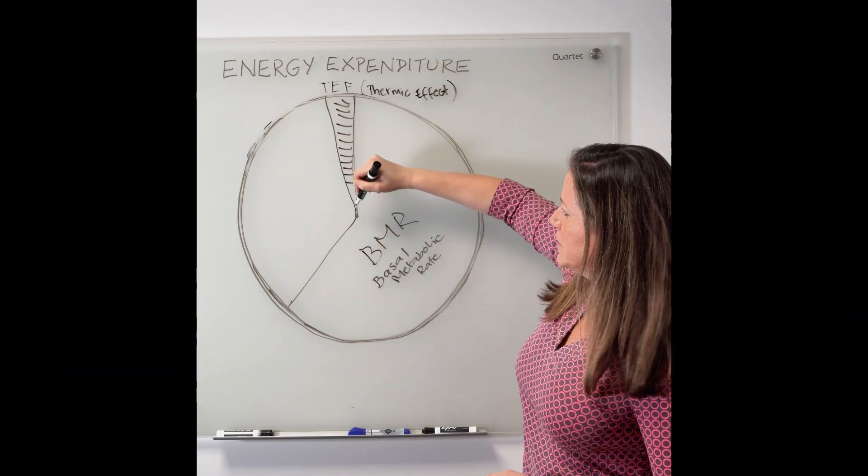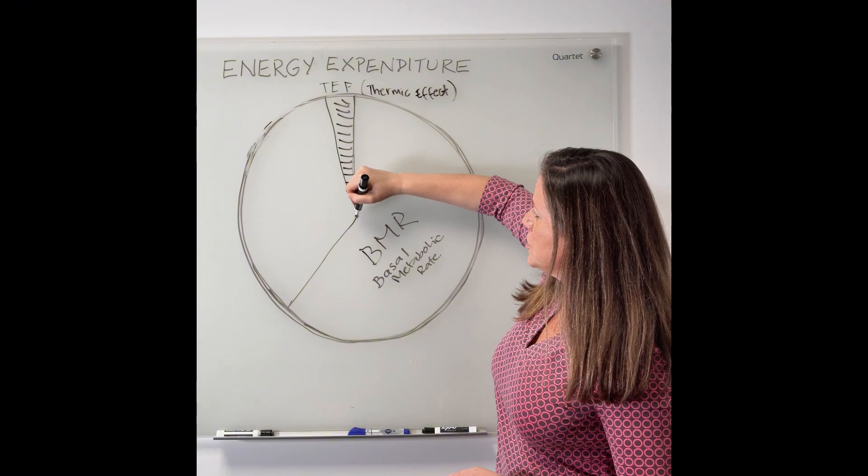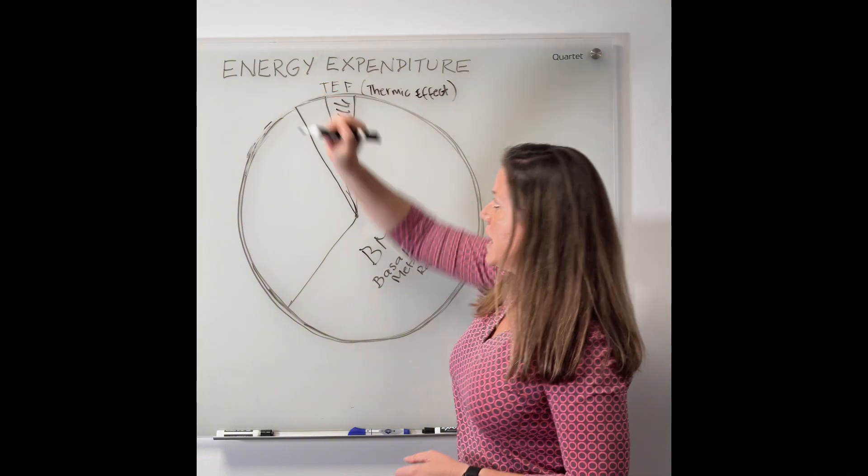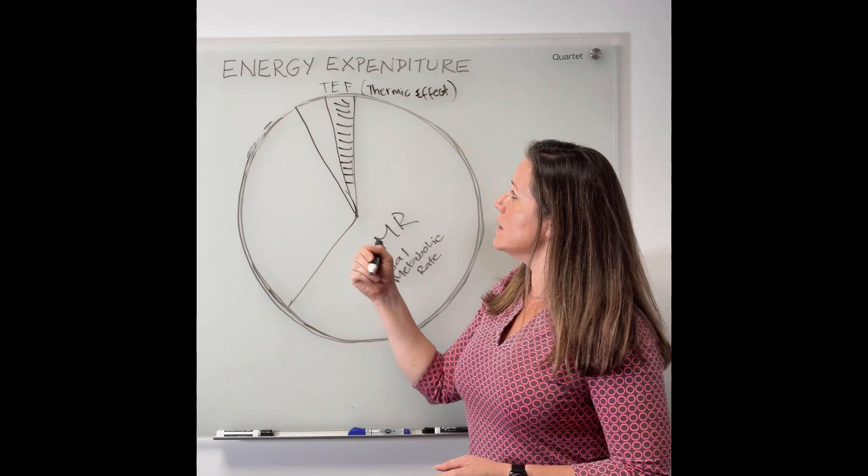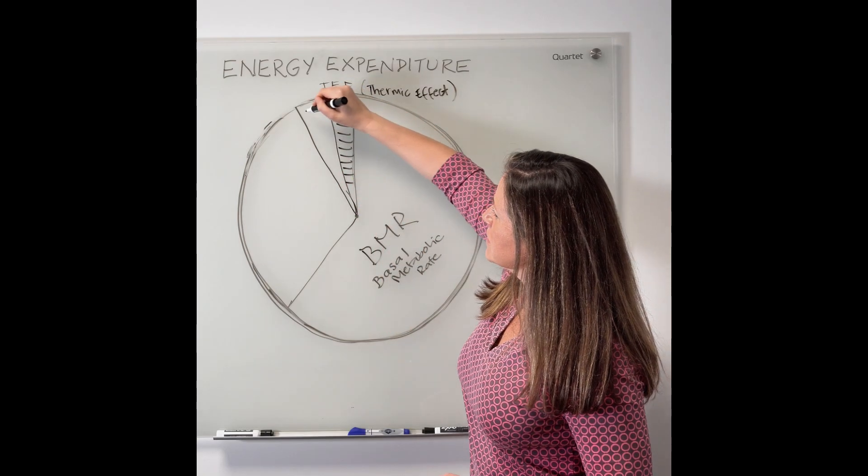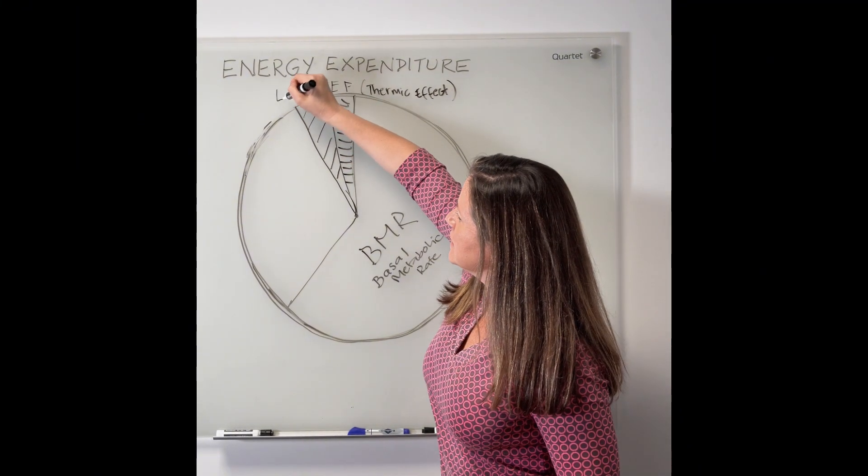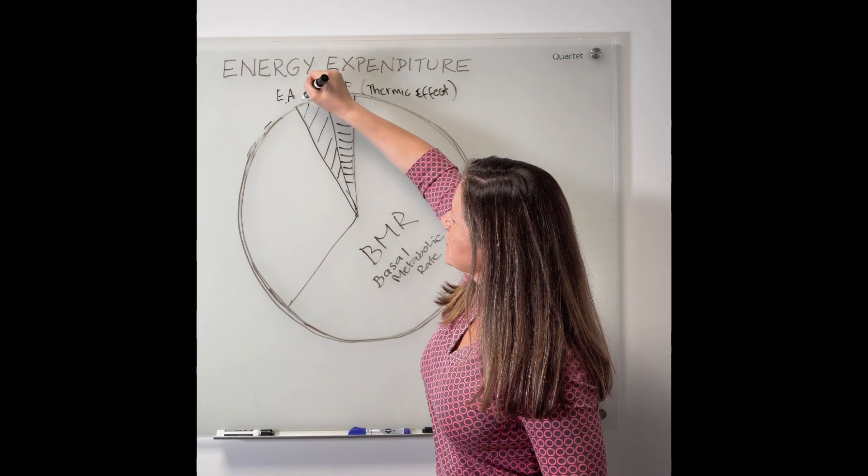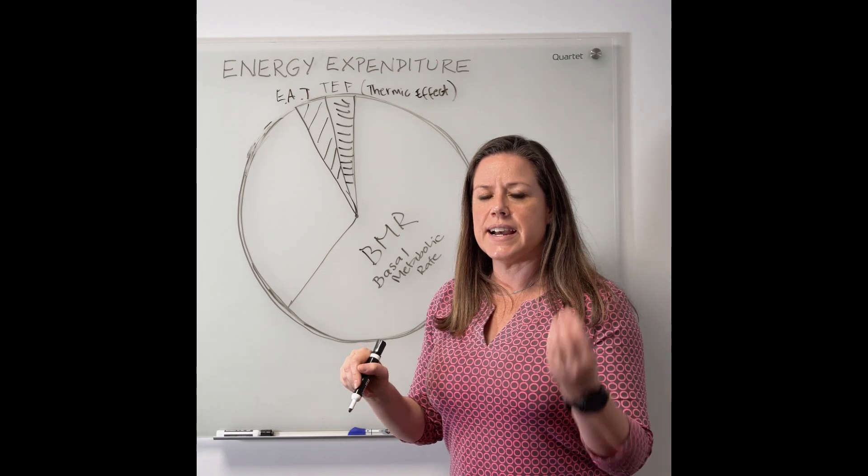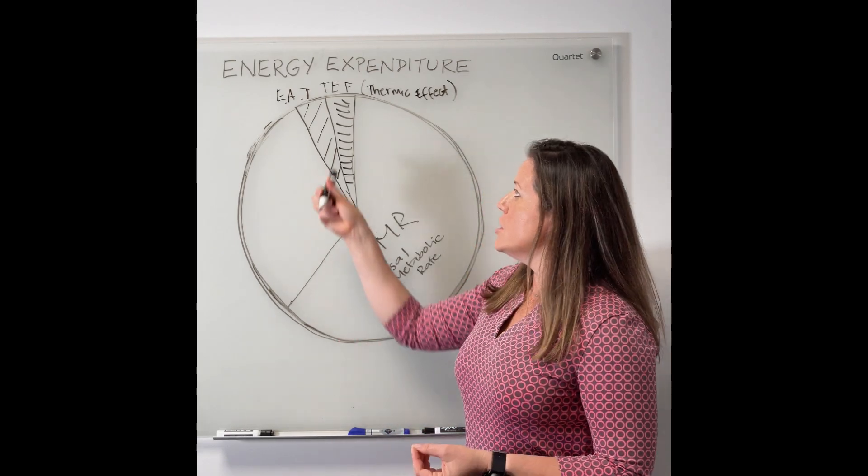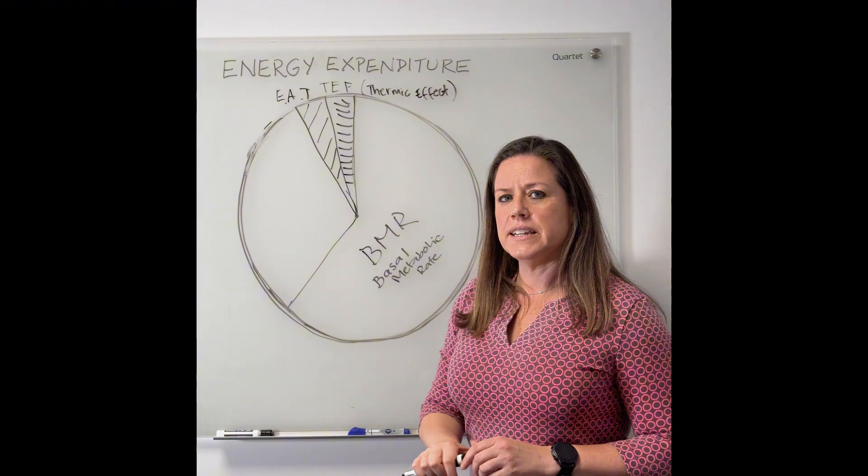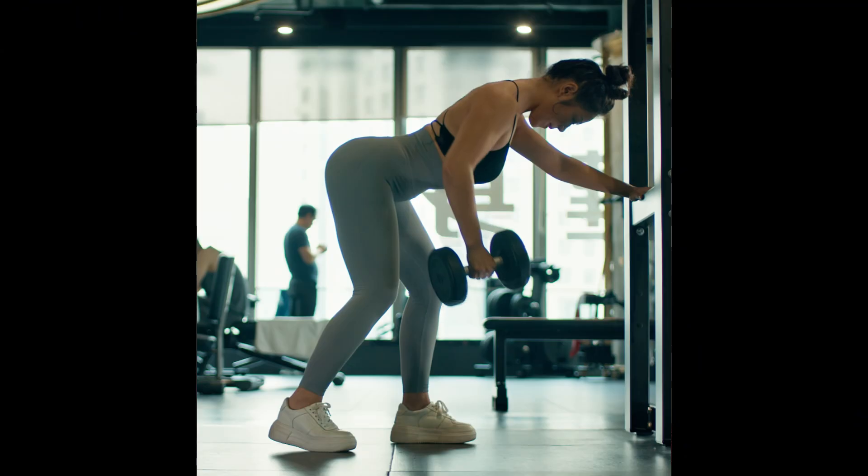Okay. Now if we draw a line to 10 PM or 10 o'clock and we label this, we're going to label it EAT, which stands for exercise activity thermogenesis. So this is how many calories you burn exercising.